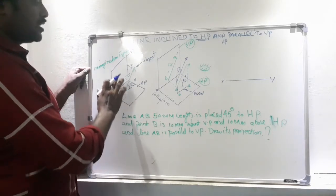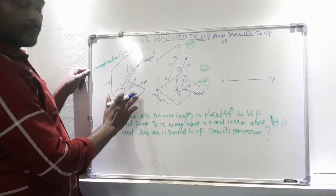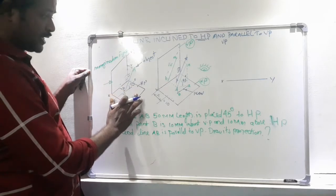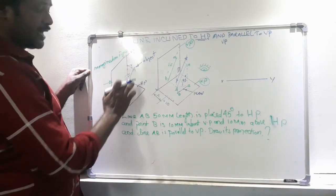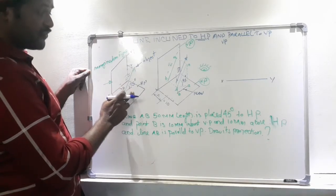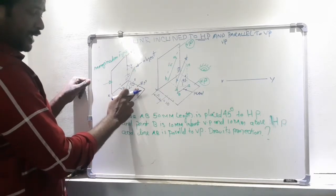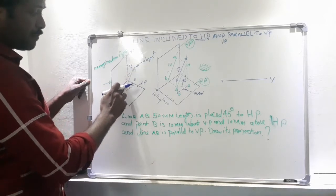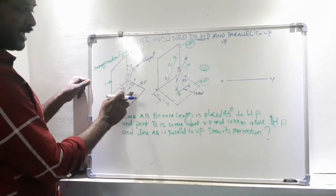This figure shows an isometric representation of first angle projection. This is the figure of the first quadrant. Our object is a line which is placed inclined to HP. From this figure, we can understand that this is our HP, the horizontal plane. According to this plane, our line AB is placed 45 degrees to the horizontal plane.